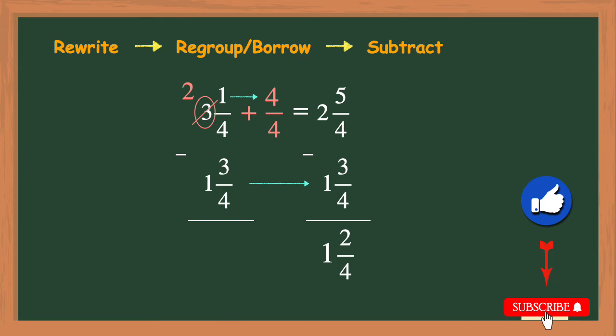Our last step is to simplify. We need to look at the fraction of our mixed number. If that fraction is improper or if the numerator and denominator share a common factor other than 1 then we can simplify it.